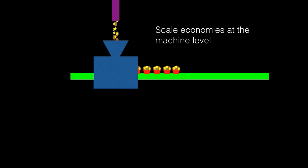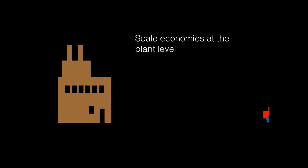Economies of scale can be present at the machine level, as a larger machine can often produce output at a lower per unit cost than a smaller machine. Economies of scale can also be manifest at the plant level, where multiple efficient machines produce output at a lower average cost than one machine.